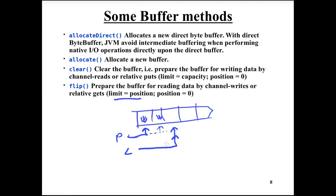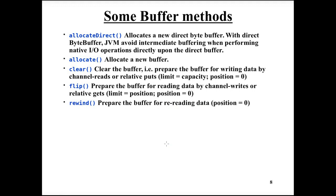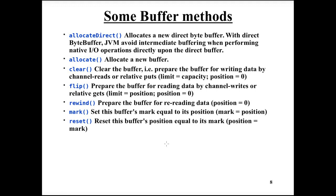Rewind just resets position to index zero while limit stays where it was, so we can start reading from scratch from index zero again. Mark places a bookmark on the current position, and reset returns the position to that marked index. These methods — clear, flip, rewind, mark, reset — handle the buffer's properties of mark, position, limit, and capacity, and can be confusing at first, so one often has to return to the API documentation.